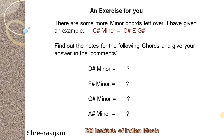There are some more minor chords left over. I have given an example: C sharp minor is nothing but C sharp, E, and G sharp. You can try to find out the notes for the following chords and give your answer in the comments: D sharp minor, F sharp minor, G sharp minor, and A sharp minor.